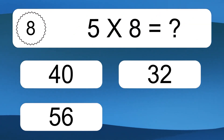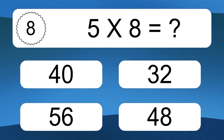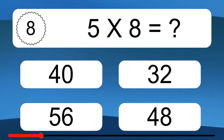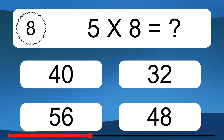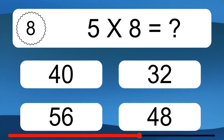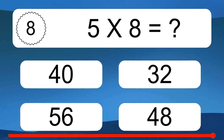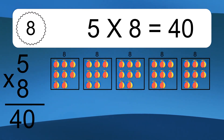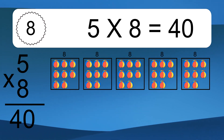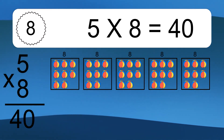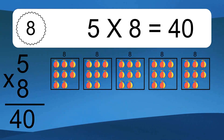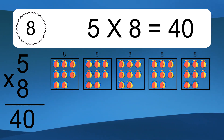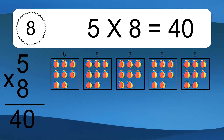Five times eight equals what? Five times eight equals 40. We have five boxes, and each box has eight colorful balls inside. If you count all the balls in all the boxes together, you will have five times eight balls. This equals 40 balls.